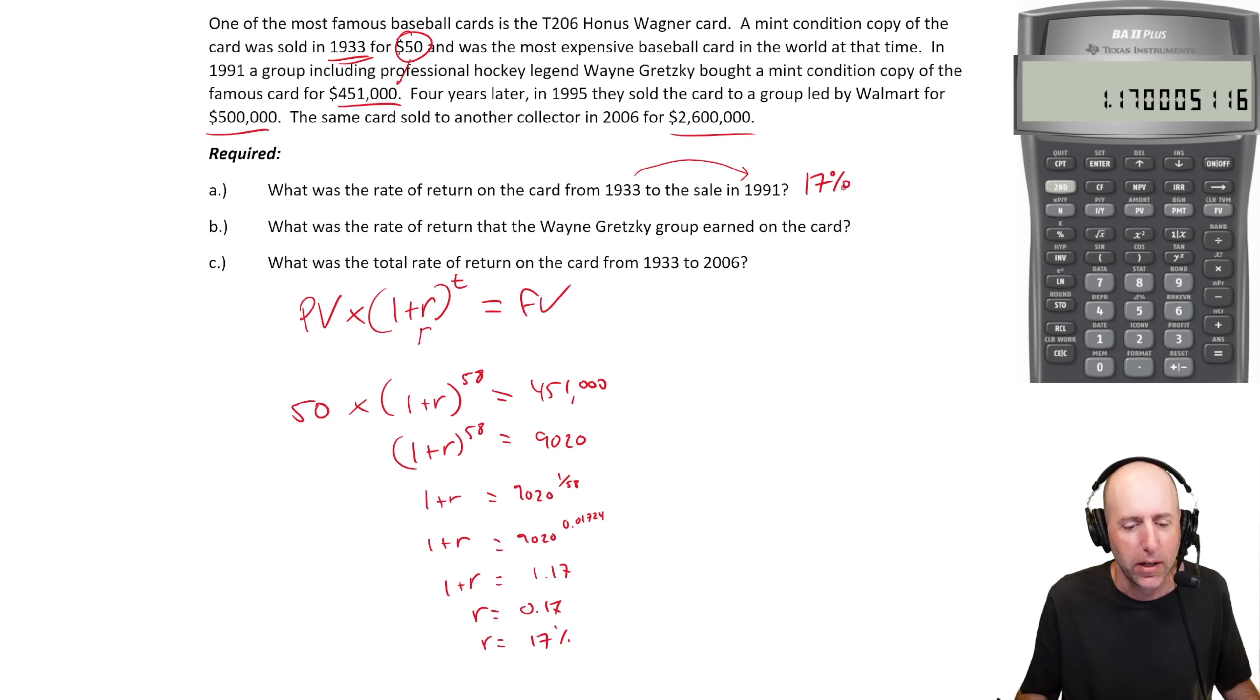What did the Gretzky group get on the card? The Gretzky group buys the card for $451,000 in 1991 and then four years later they sell it for $500,000. They didn't get a great return here. Let's do the math. The PV is $451,000 times one plus r to the power of how many years? Four years later they sell it for $500,000.